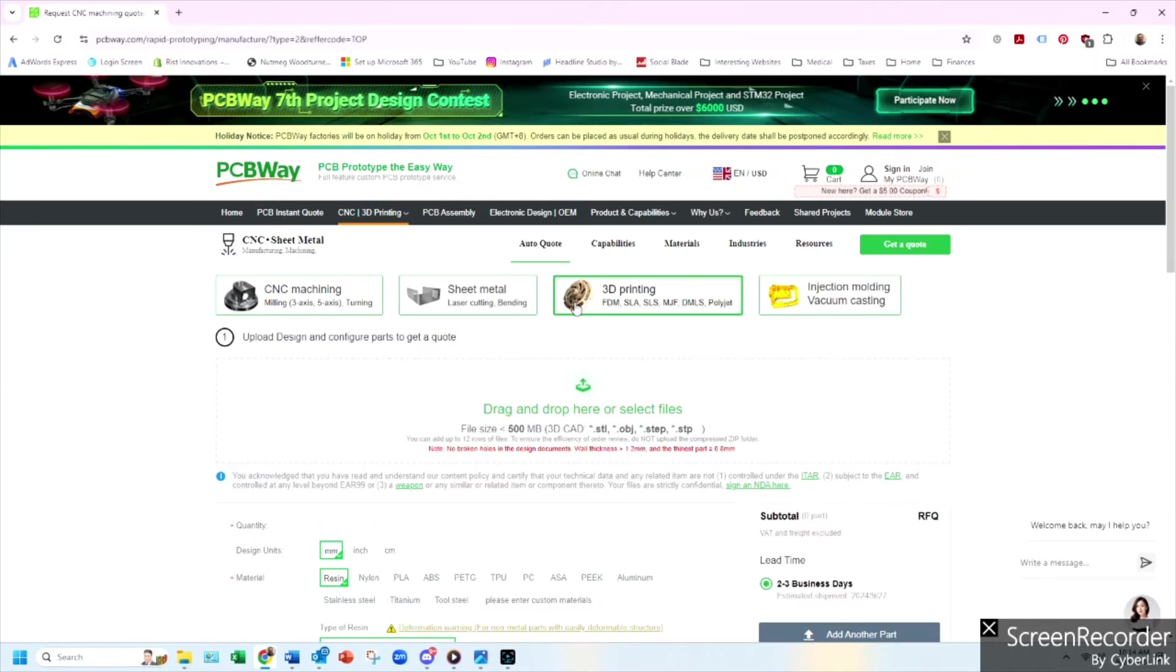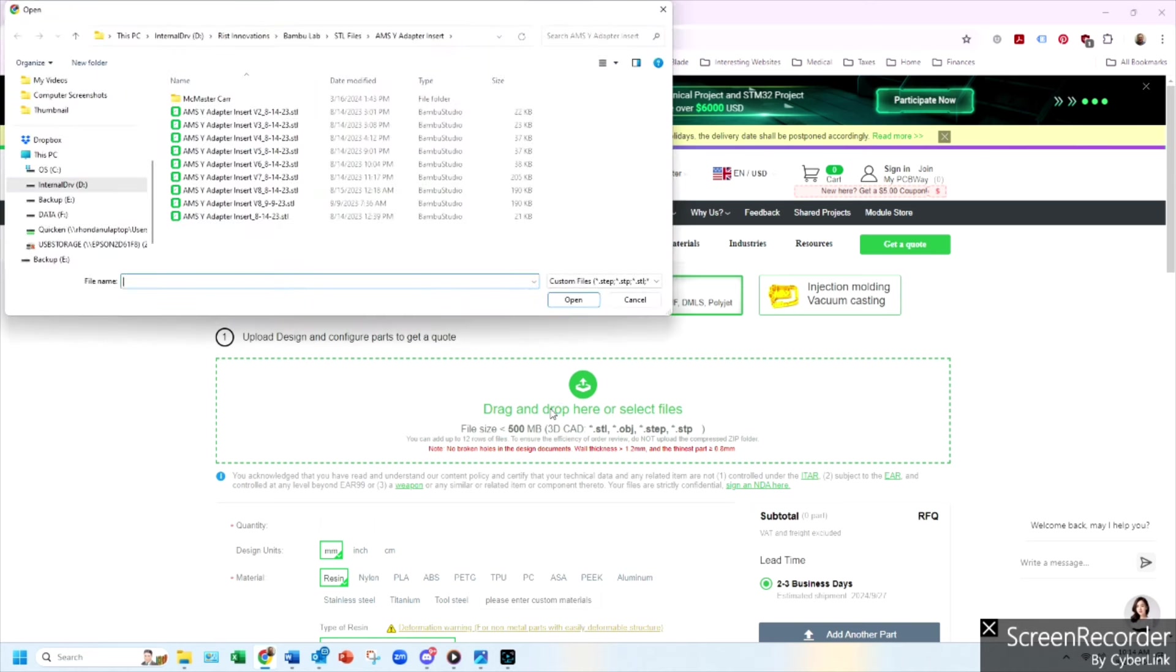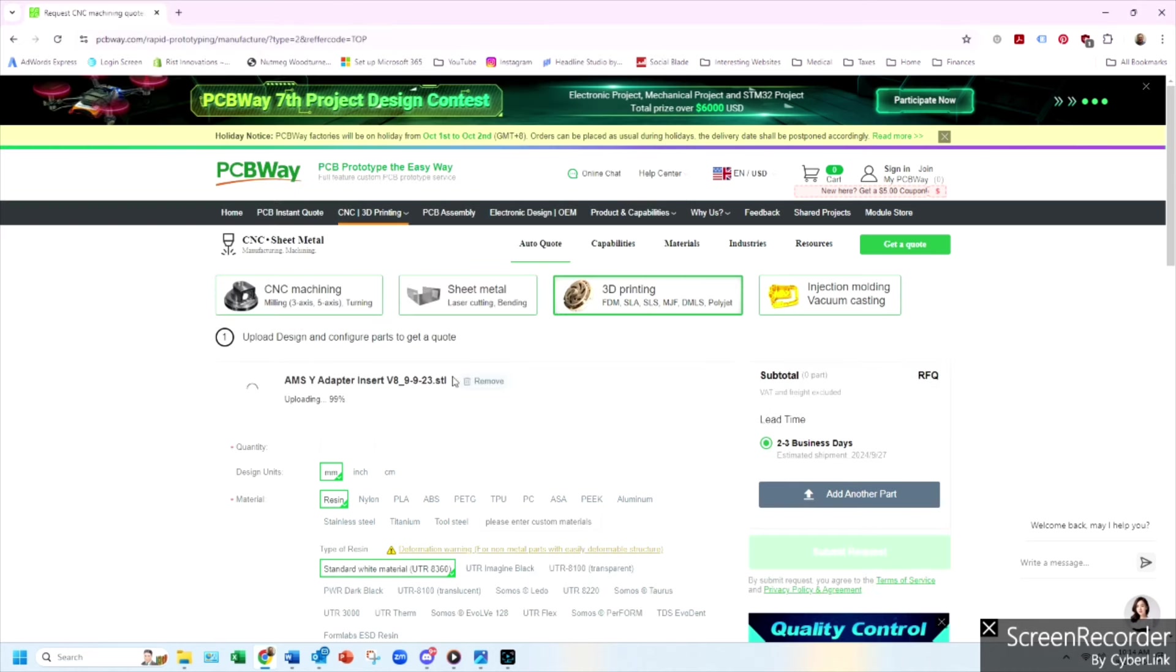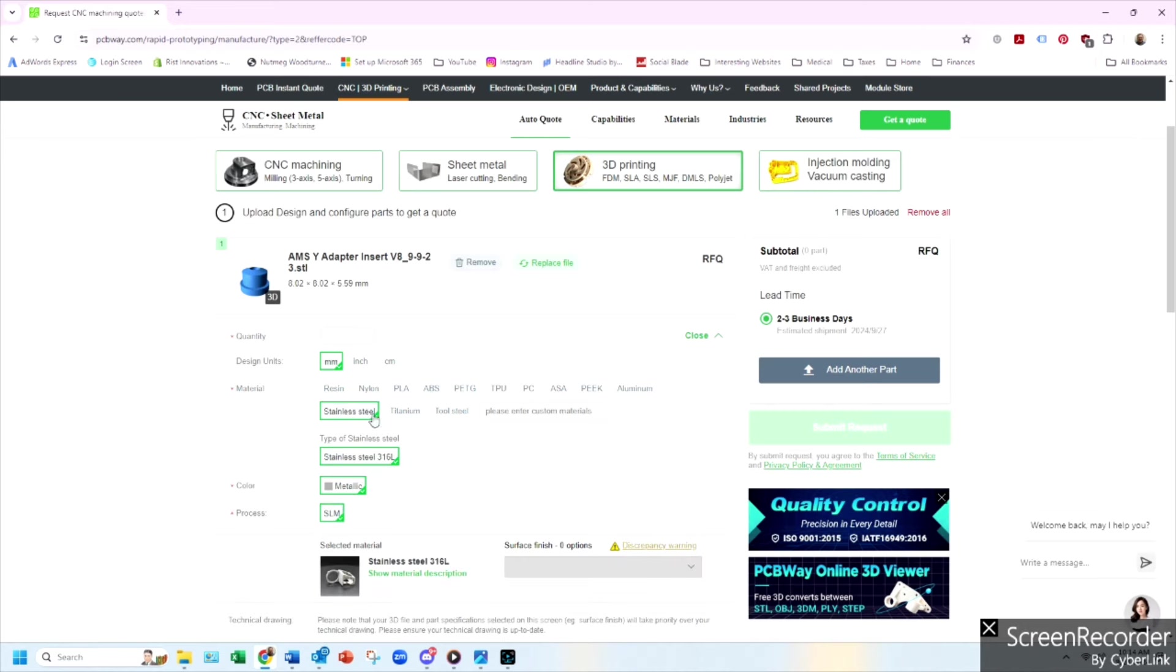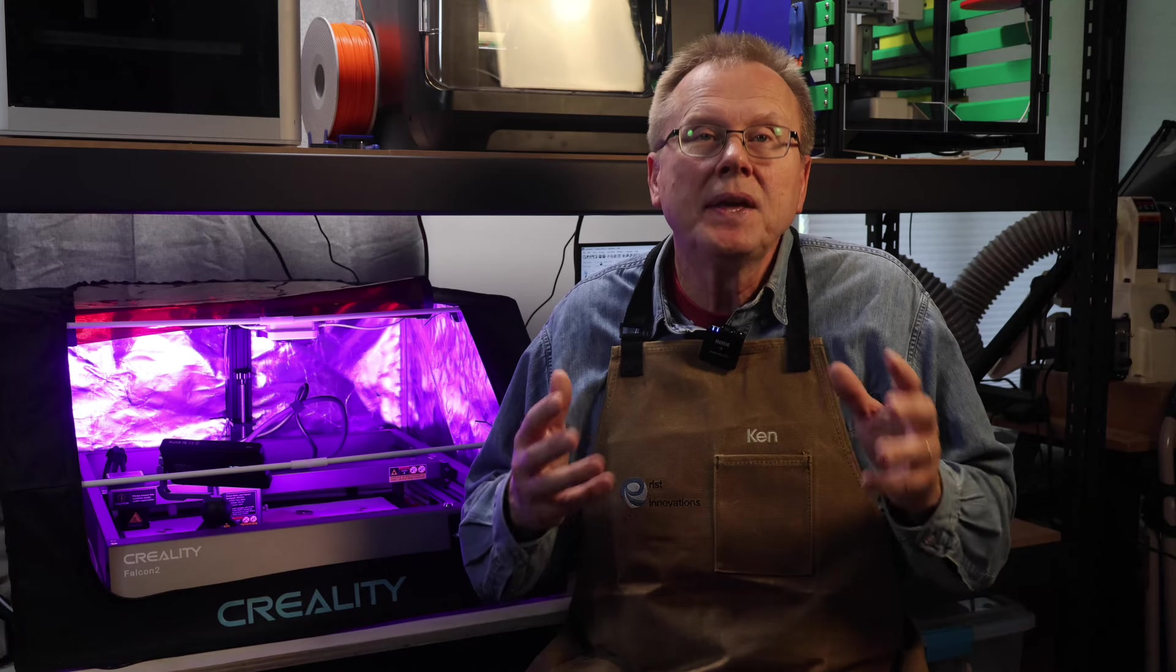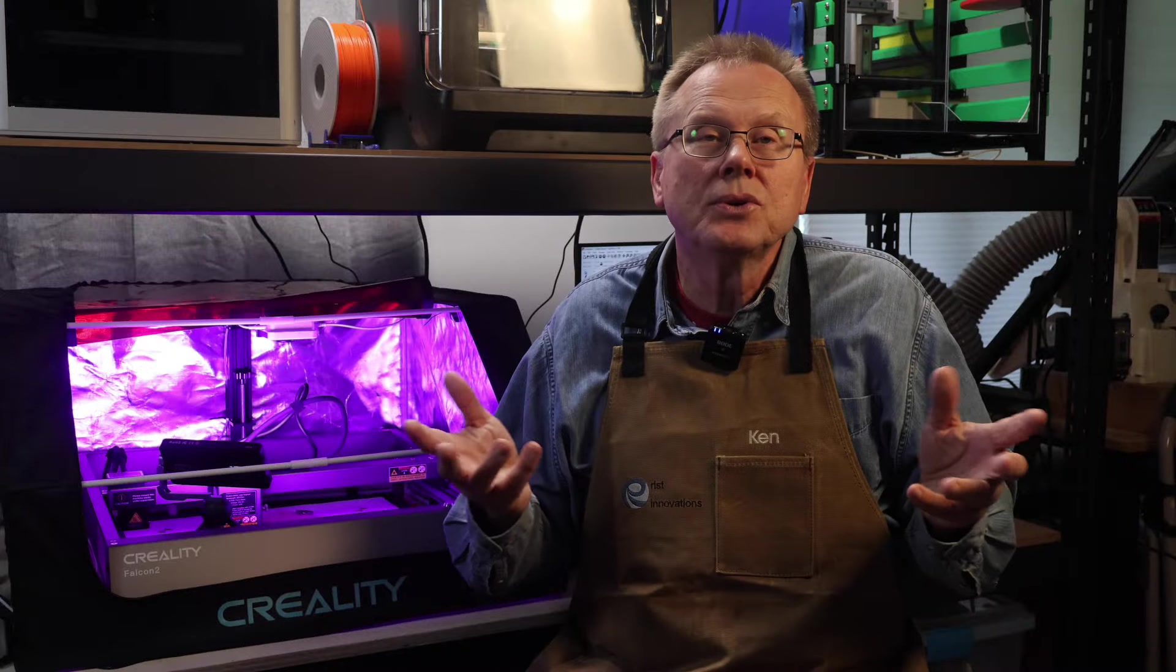Check out the prizes PCBWay is offering and consider entering. For any parts you need made, just go onto their website, upload your design, select the material and quantity you need, and you will get an instant quote. Then they will manufacture the parts and ship them right to your door. Give them a try and I think you will be amazed at what they can do for you. Check out PCBWay using the link below.